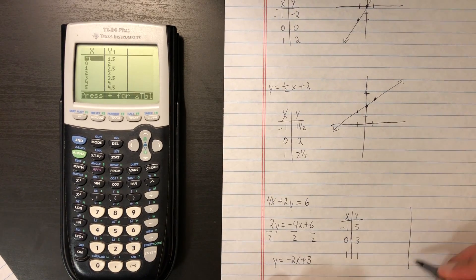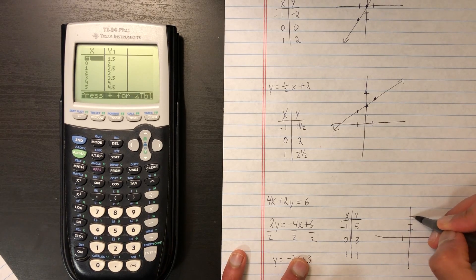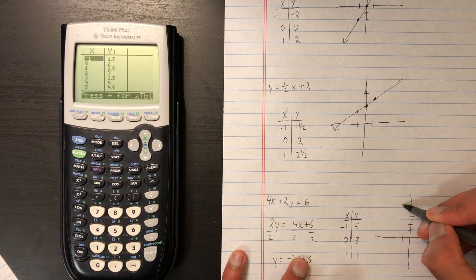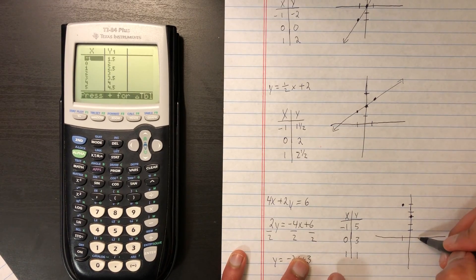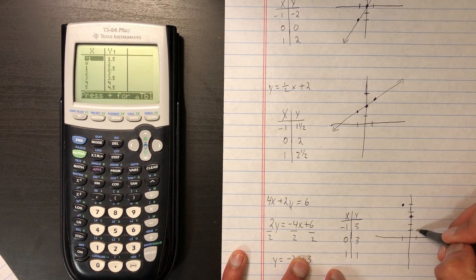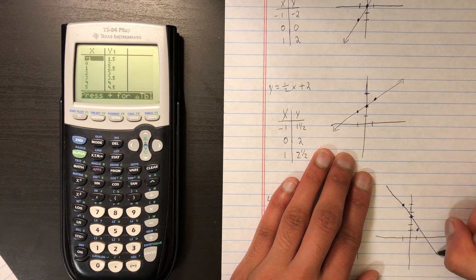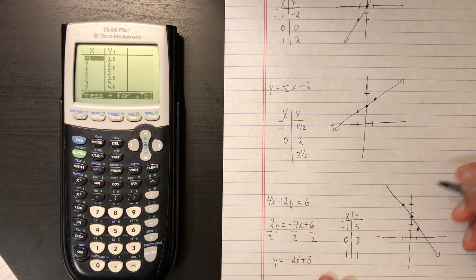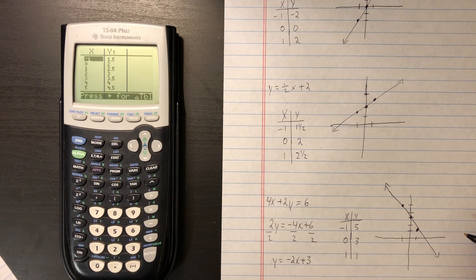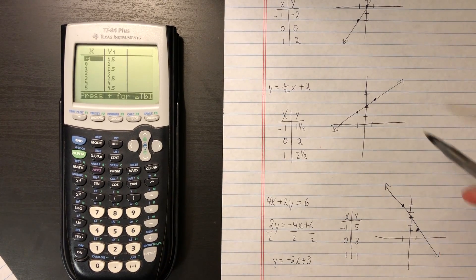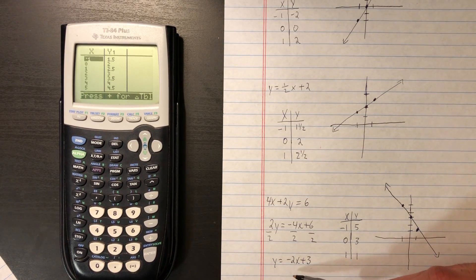Let's create a graph for this. So negative 1 and positive 5. 1, 2, 3, 4, 5. Plot that down. And the next one is 0, 3. Right here. Last one is 1, 1. There we go. Then we can create a line from this. Just connect the dots. Let's make that a little bigger. And that's our graph. Notice how it points the other way compared to the previous two. And that's because this graph has a negative slope of 2.